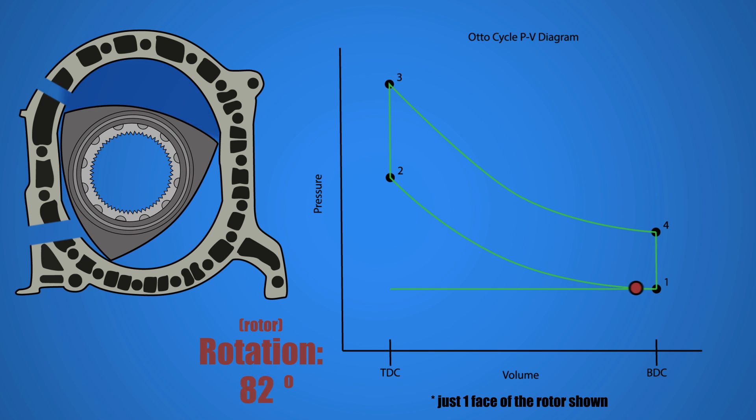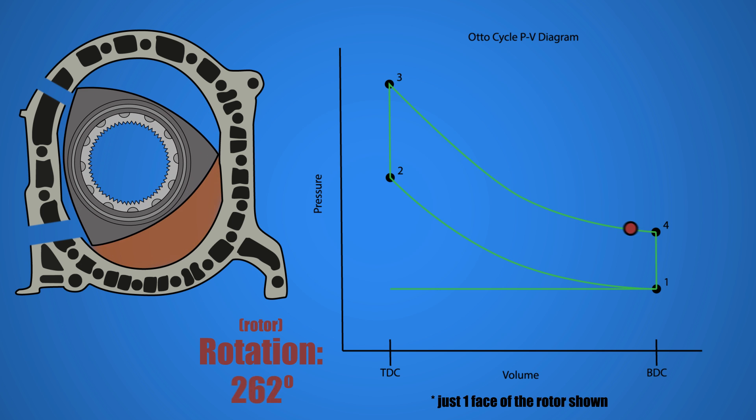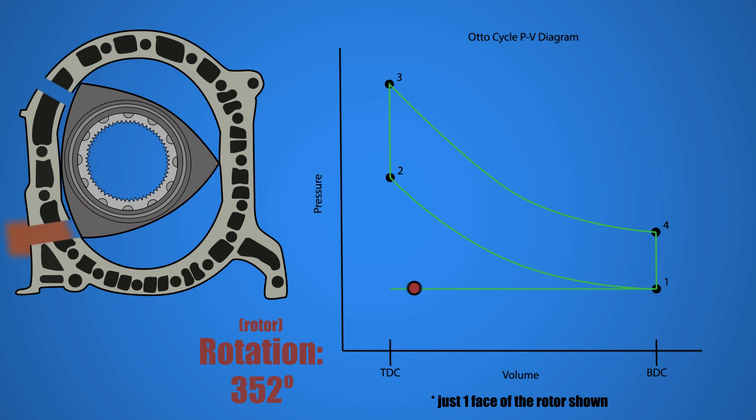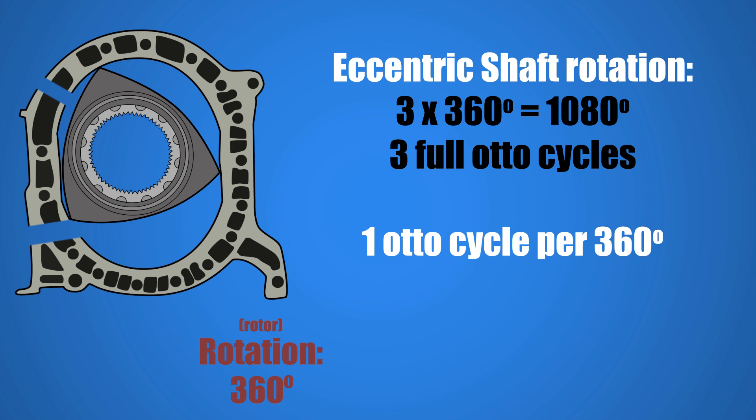Now if we look at a rotary engine completing the Otto cycle, three full thermodynamic cycles are completed with one full rotation of the rotor on each of the three faces. The eccentric shaft rotates three times the rate of the rotor so we are left with three full thermodynamic cycles completed in three crankshaft rotations resulting in one thermodynamic cycle completed in one full rotation of the crankshaft.